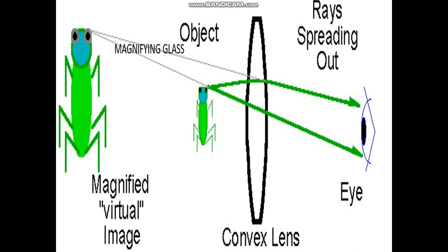Here the convex lens is used as a magnifying glass. You can see that this is a convex lens and there is a small object — a small ant — kept here, and you can see an enlarged view of this ant. As you remember, this is possible when the ant is kept between the optical center and focus of the convex lens. So it is used as a magnifying glass.